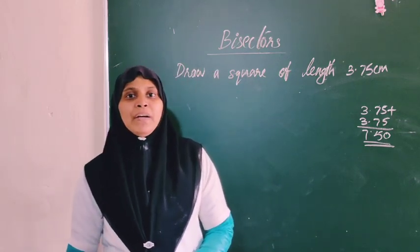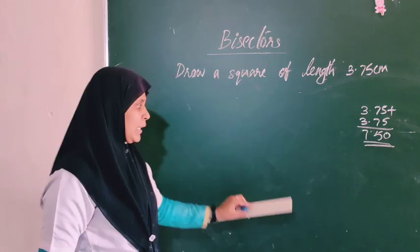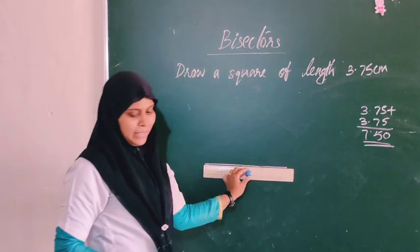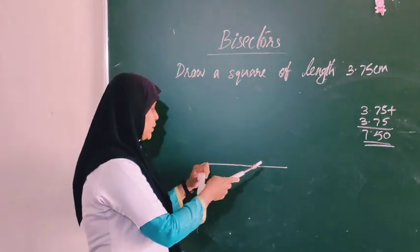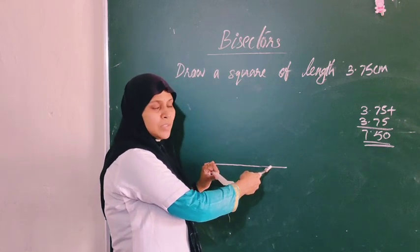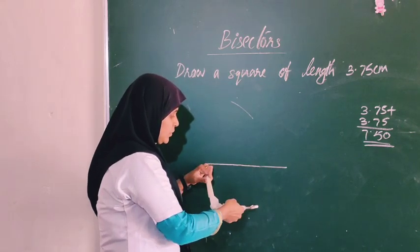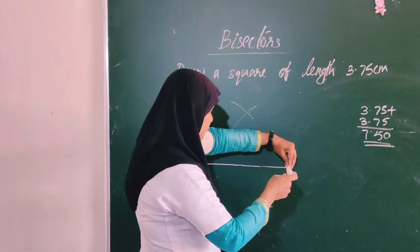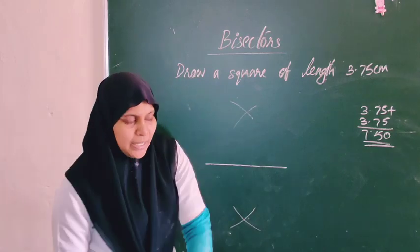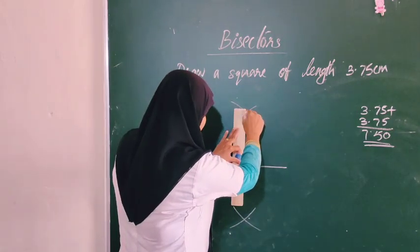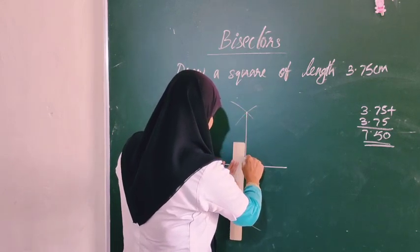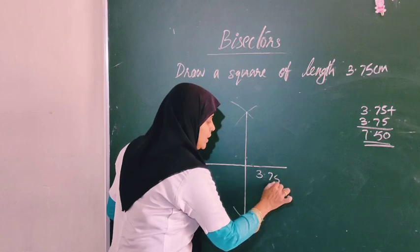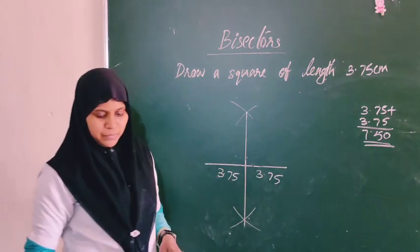The length of this line is 7.5. This portion is 3.75. Now we set the compass to more than half the line and draw arcs from both endpoints. The two arcs intersect to form the perpendicular bisector. Both measurements from each end are 3.75 centimeters, confirming the midpoint.